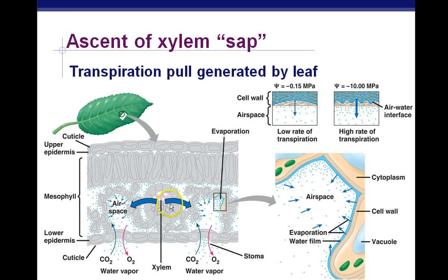Here is a vascular bundle of a leaf — this is a vein. In that vein, we have two things: xylem located on the top and phloem on the bottom. With the xylem, water adheres to the sides of the cell walls of the plant, and then cohesion between water molecules prevents the water from falling back down to the roots.